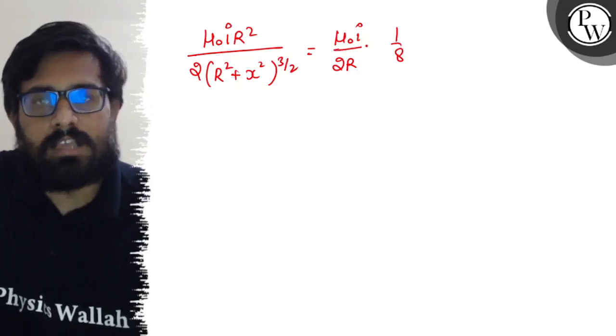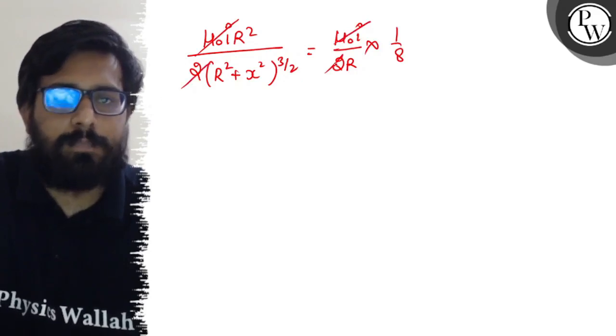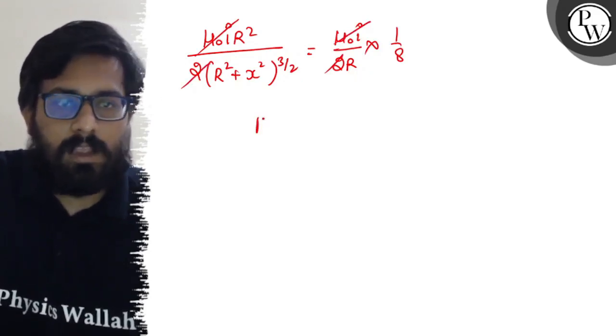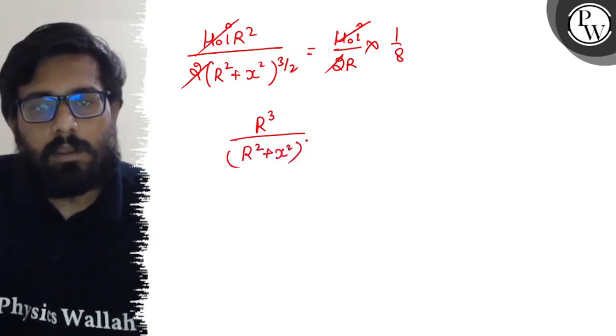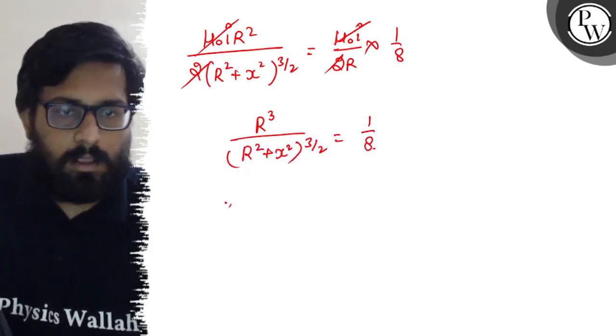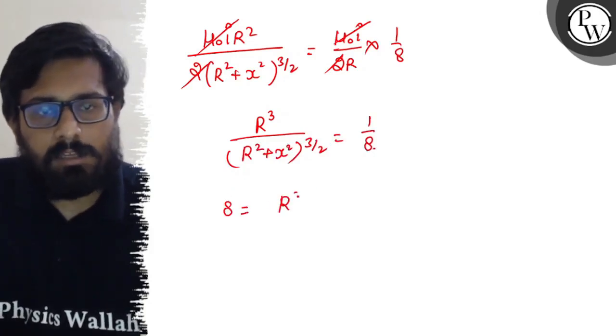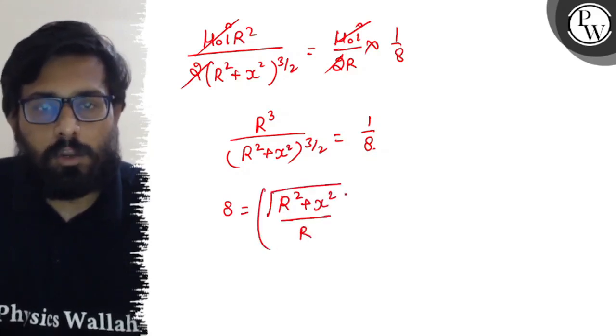So R³ upon (R² + x²)^(3/2) is equal to 1 by 8. From here, 8 can be written as (R² + x²)^(1/2) upon R, whole cubed.